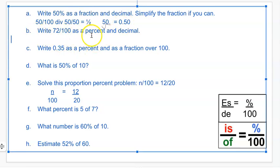So write 72 over 100 as a percent and decimal. So 72 over 100 is just 72%. And as a decimal, you move it from 72 over one, two, and it would be 0.72.